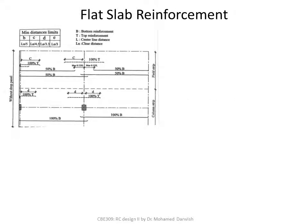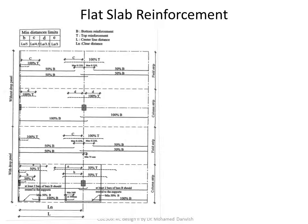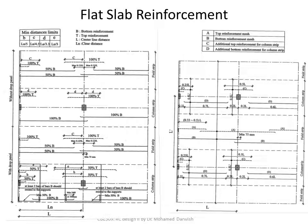Flat slab reinforcement can be done in one of two ways: either directly reinforce based on the bending moment value at each location (positive or negative), calculating different sections and applying reinforcement accordingly; or — the preferred approach — use a mesh. You have an upper mesh and a lower mesh covering the reinforcement of the field strips as the base reinforcement common across the whole flat slab. Then you add additional reinforcement at the column strips.